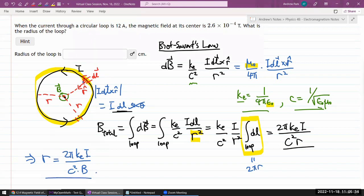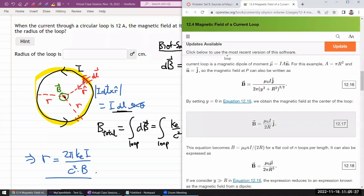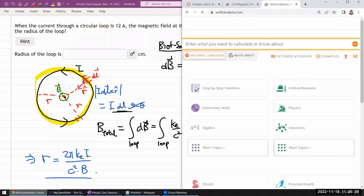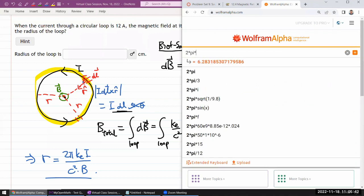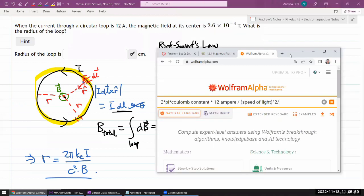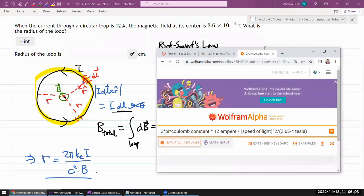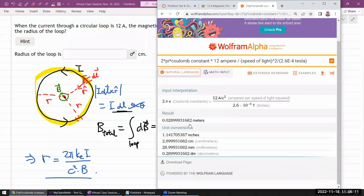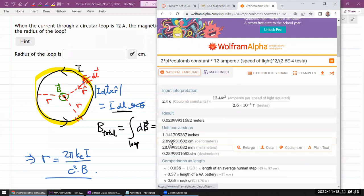Let's double check to be sure. So I'm going to just plug this into Wolfram Alpha, so it does all the looking at the constants and other stuff for me. Coulomb constant times the current, 12 Ampere, divided by speed of light squared, divided by magnetic field. So that's the value of magnetic field here, 2.6 times 10 to the minus 4 Tesla. So it should give me some unit of length, good, in centimeters, 2.90 centimeters.